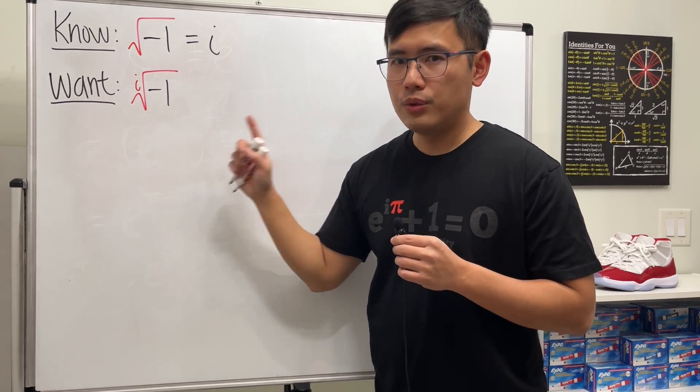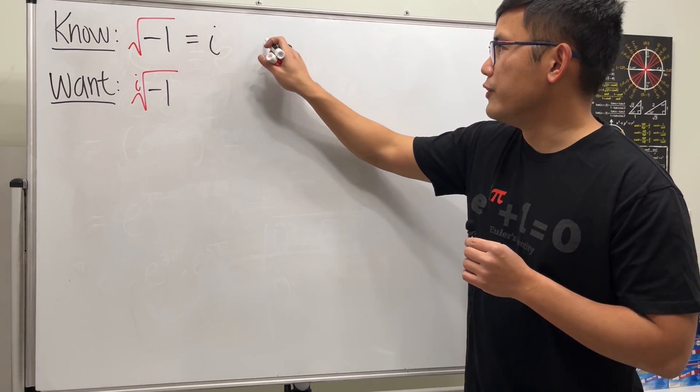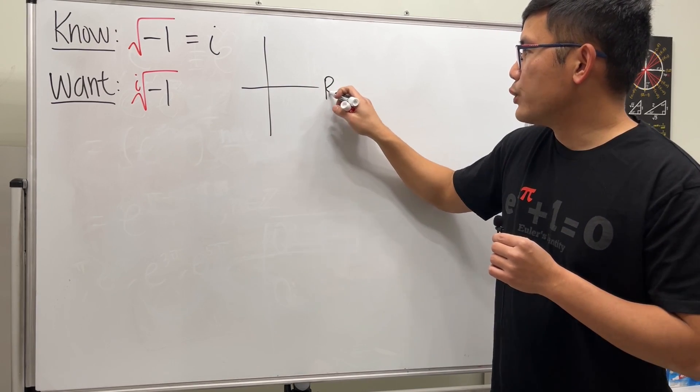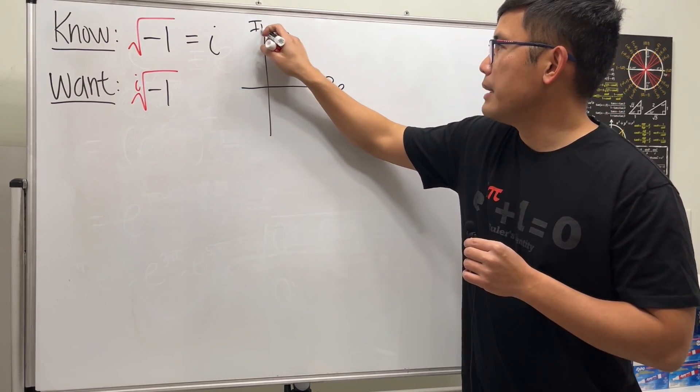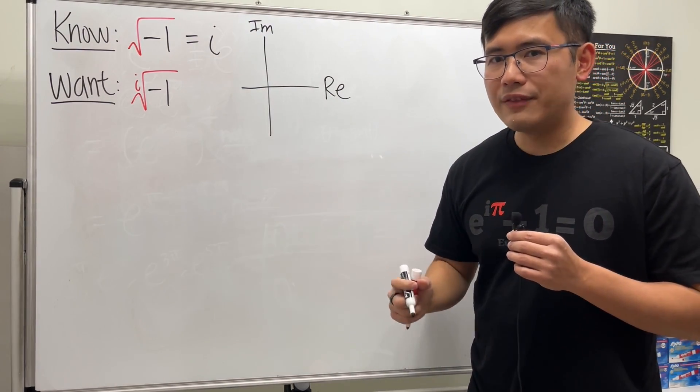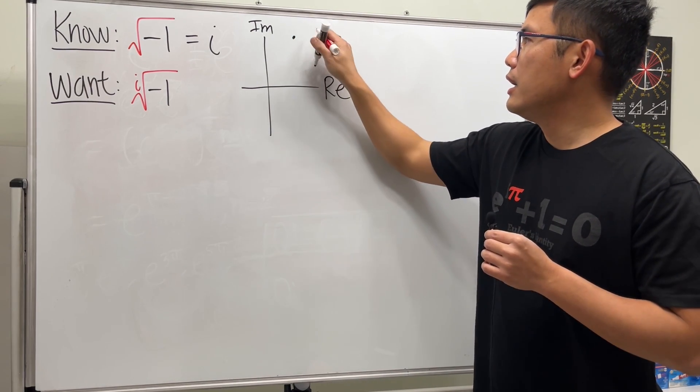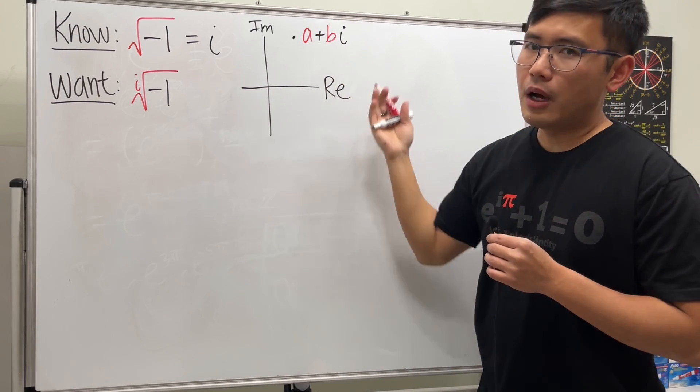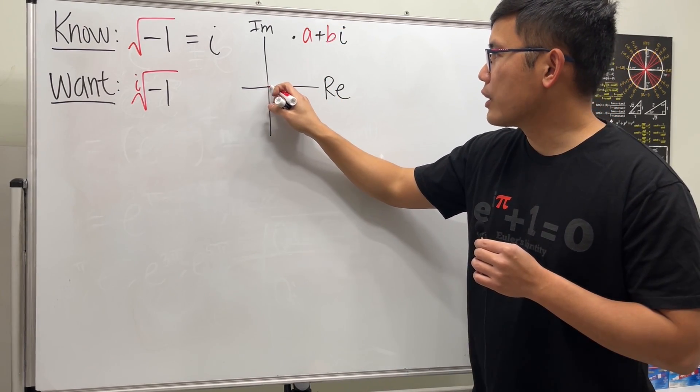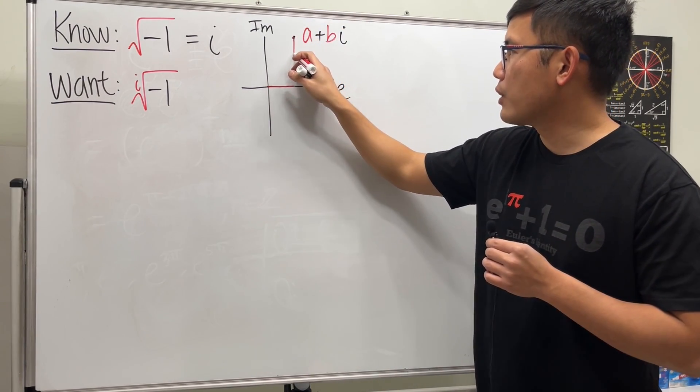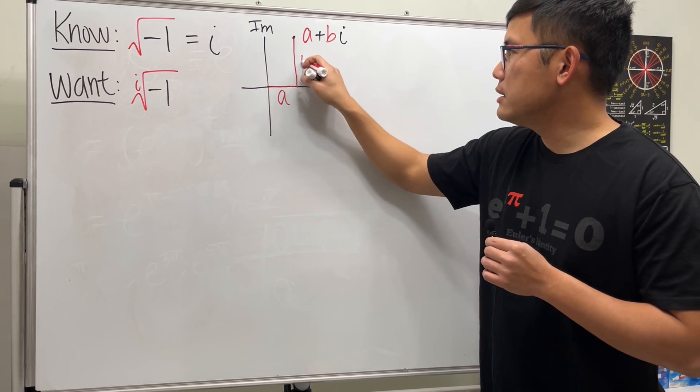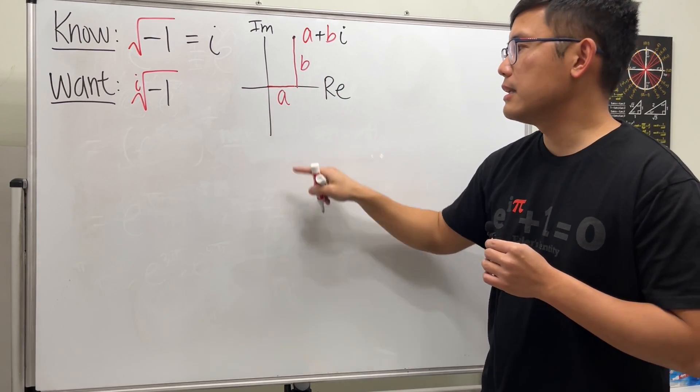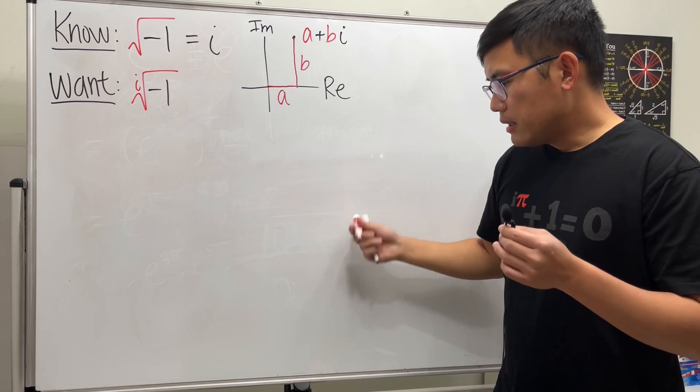We are going to take negative 1 to the complex world. Here's a quick review: here is the real axis and here is the imaginary axis. Let's say we have a complex number right here—that's a plus bi where a and b are real. a means the distance from here to here, and b means the distance from here to here. This is the standard form of a complex number.